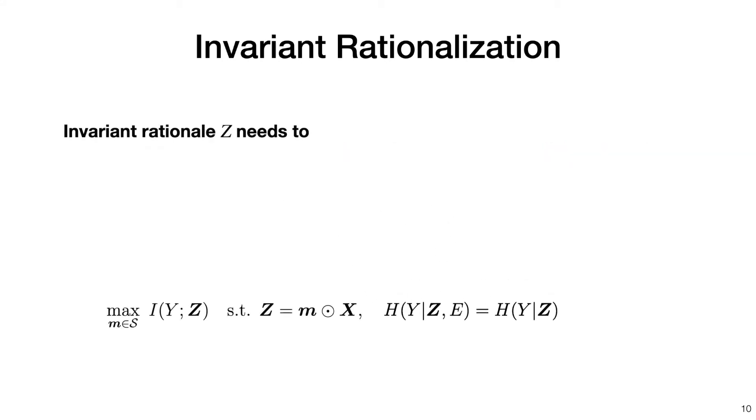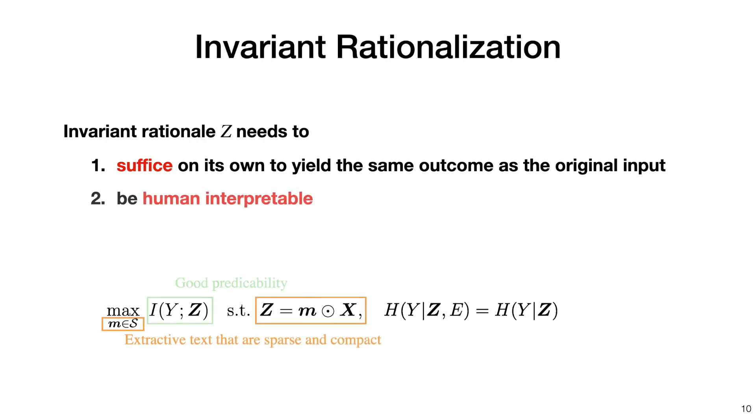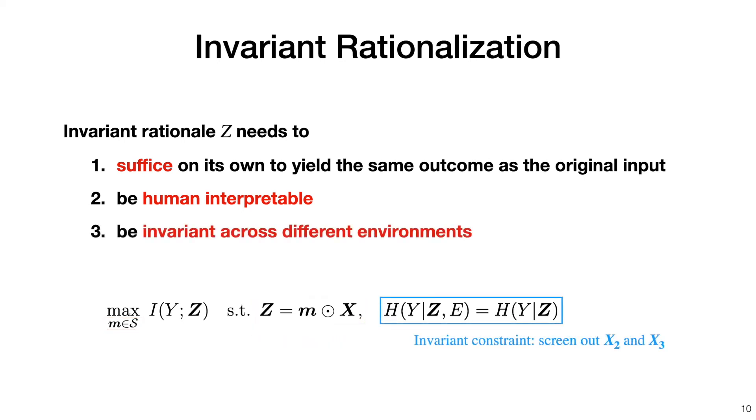Building upon this definition of invariance, our invariant rationalization framework is formulated as follows. It contains three requirements. First, the rationale should be as informative of y as possible. Second, it needs to be a short and continuous selection of text so that it is human interpretable. Finally, it should be invariant.